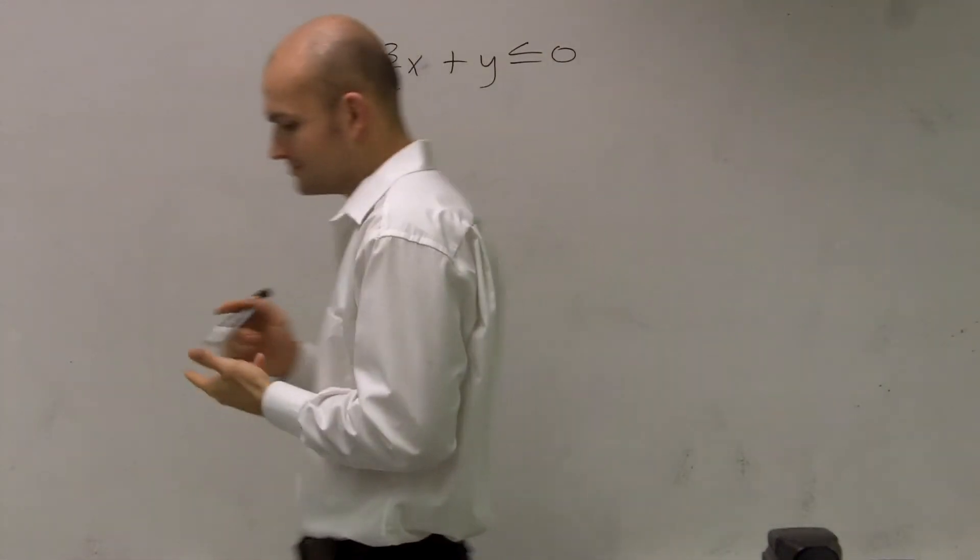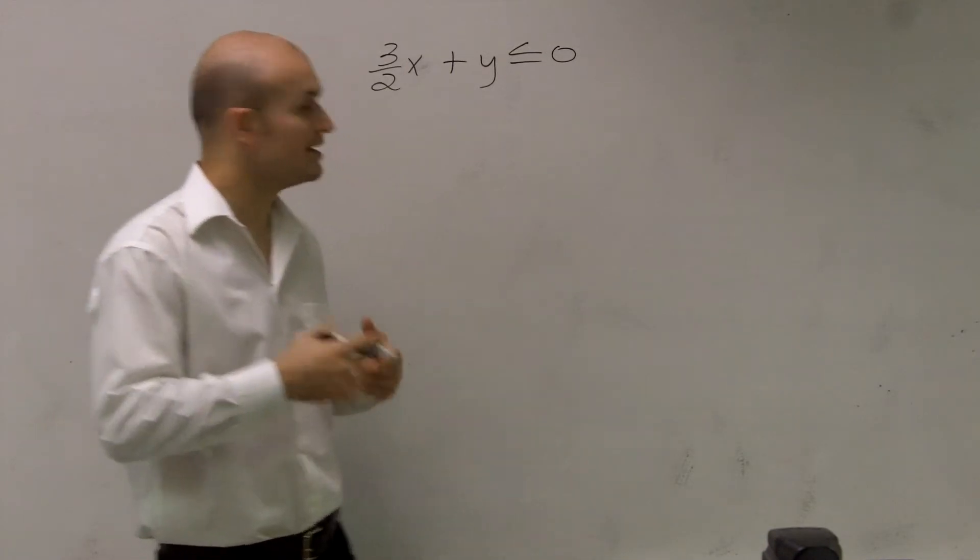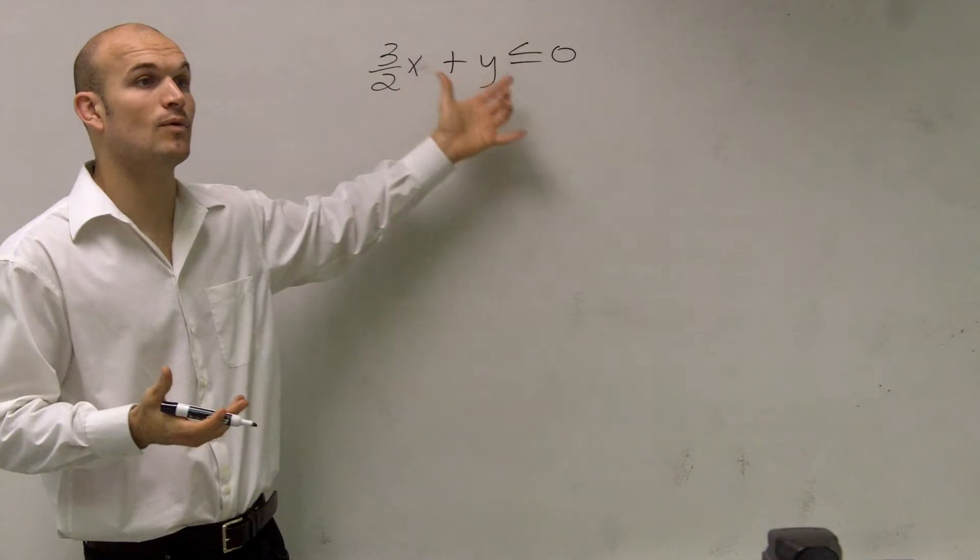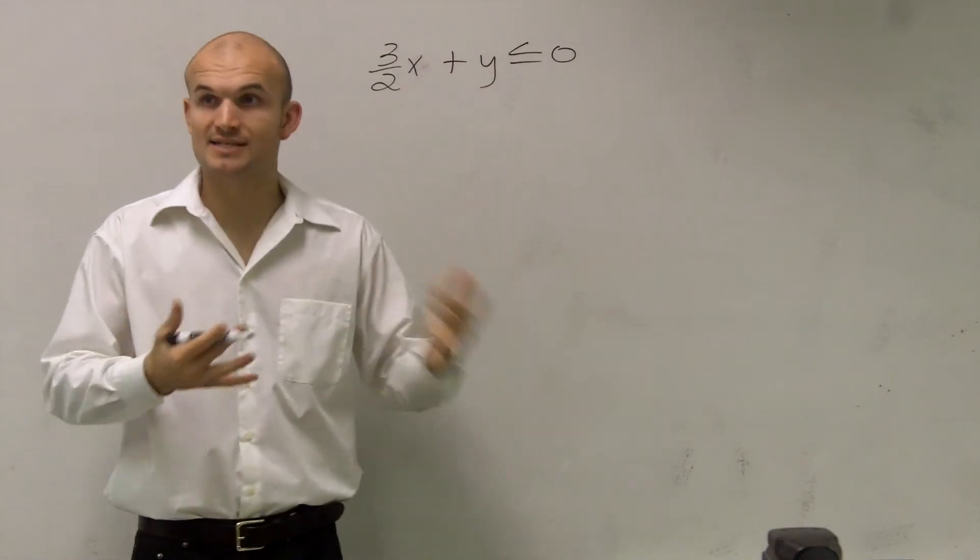Well, if I want to graph this, there's a couple ways we can do this. Along the way, remember I told you guys, whenever you have an x and a y on the same side, we can use the x and y intercepts. Plug 0 in for x and plug 0 in for y.